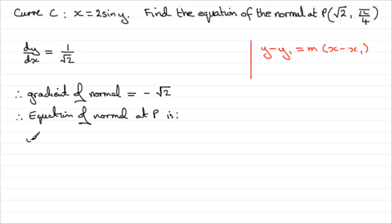It's going to be y minus y1, which is pi upon 4, equals m, the gradient, which is minus root 2, all multiplied by x minus x1, and x1 was root 2.